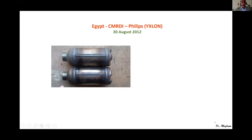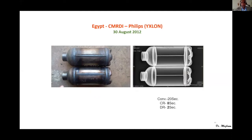For small cylindrical parts in Egypt, you can be impressed by these screens — conventional gave results in 20 seconds, using CR in 8 seconds, using DR in only 2 seconds you can get very nice screens on the right side.